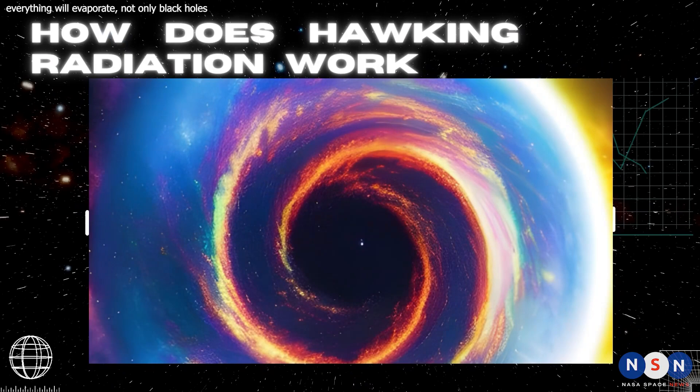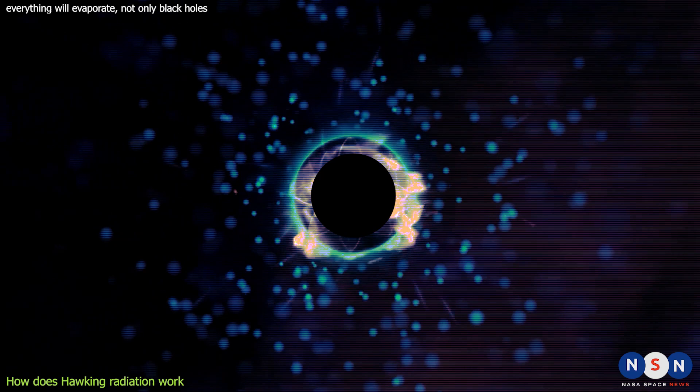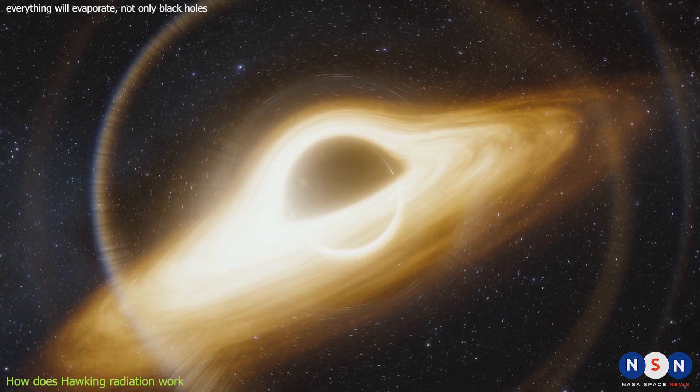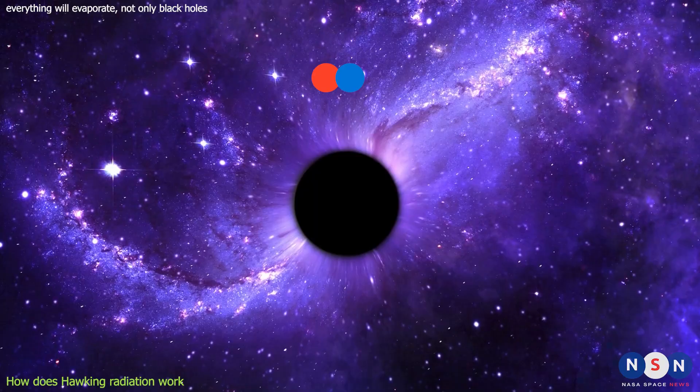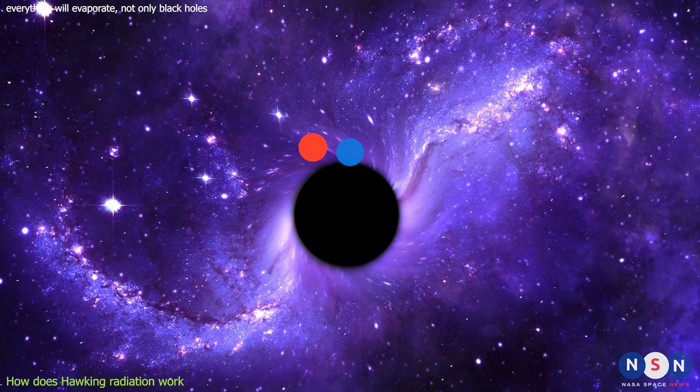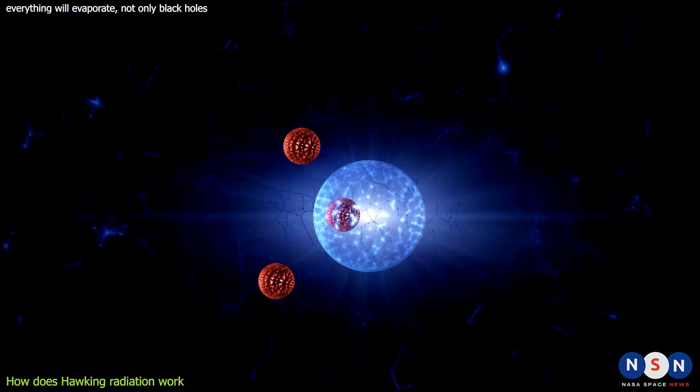Hawking radiation is very faint and hard to detect. It depends on the mass and size of the black hole. The smaller and lighter the black hole, the hotter and brighter it is. This is because the event horizon becomes closer to the singularity where gravity is extremely strong and quantum effects are more pronounced.